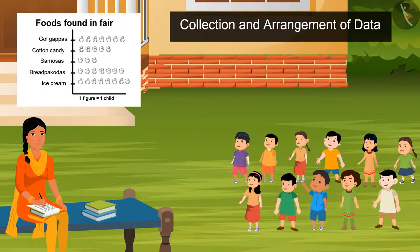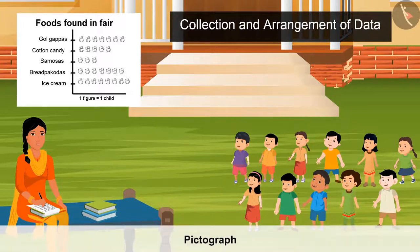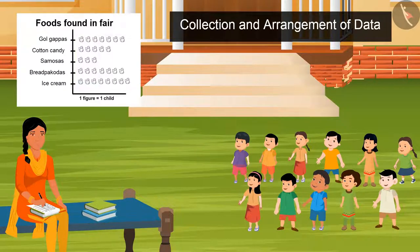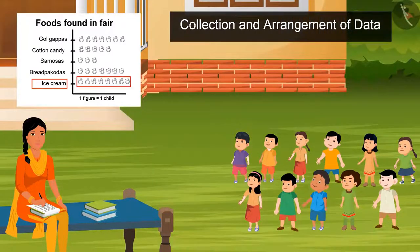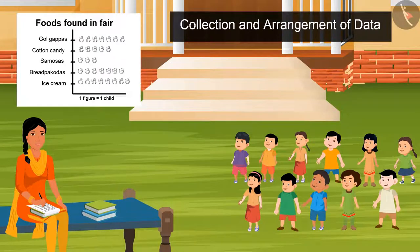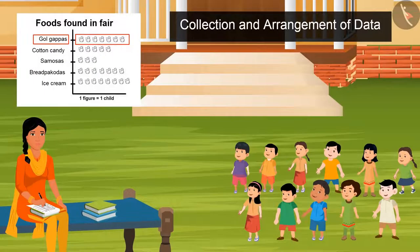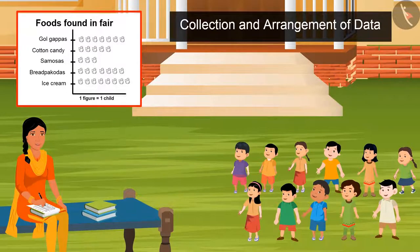Sister, what have you made? Look, this is known as a pictograph. In this, with the help of pictures, I have shown the number of kids with the choices of food. By closely looking at this pictograph, tell me which food is highly chosen by the kids? Ice cream. Absolutely right. Now, tell me what should we buy more — samosas or bread pakoras? Bread pakoras. Right. Now tell me how many kids love gol gappas? 7. Very good. So kids, a pictograph is also a very good way to represent data in an organized manner. Have you seen how easily and quickly we have answered with the help of these?